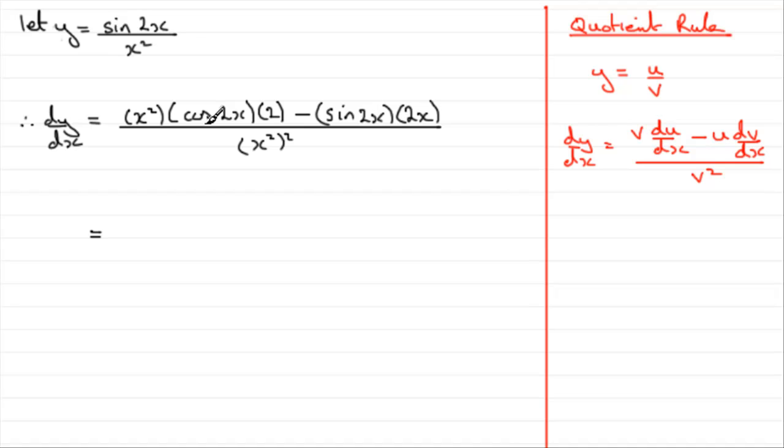So we've got two terms on the top. Tidy up the first term, put the 2 with the x squared, and you've got 2x squared. And then times cos 2x. So 2x squared cos 2x. And for the second term, 2x would look better at the front, so that would be minus 2x sine 2x. And x squared all squared is going to be x to the power of 4. Basically, that's it. That gives us dy by dx.